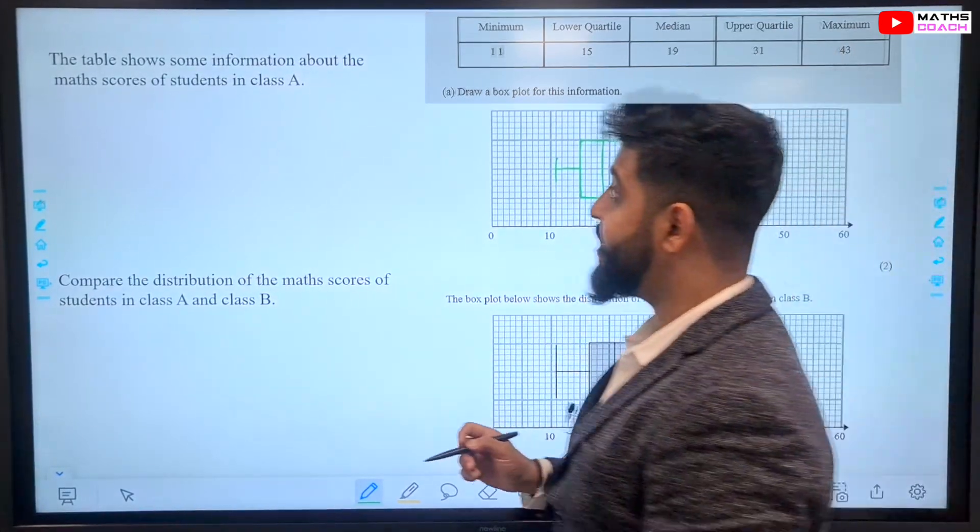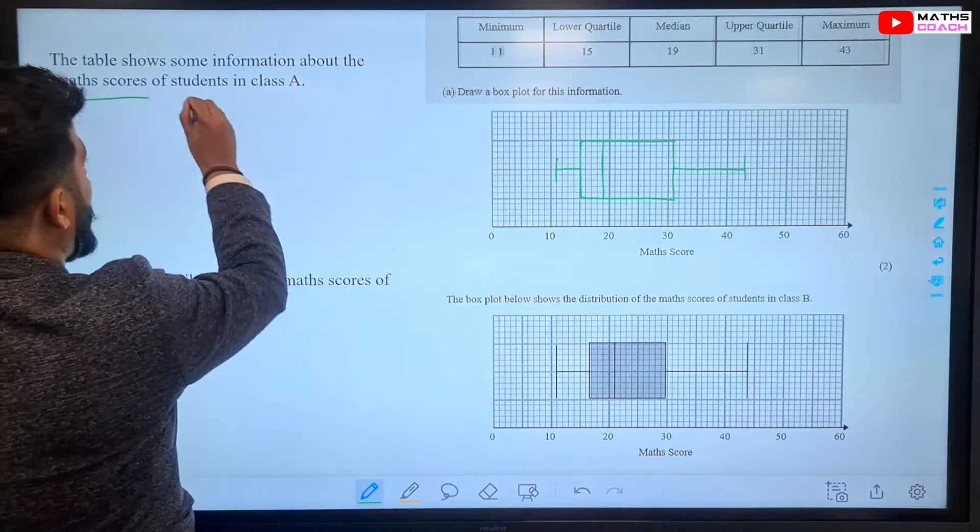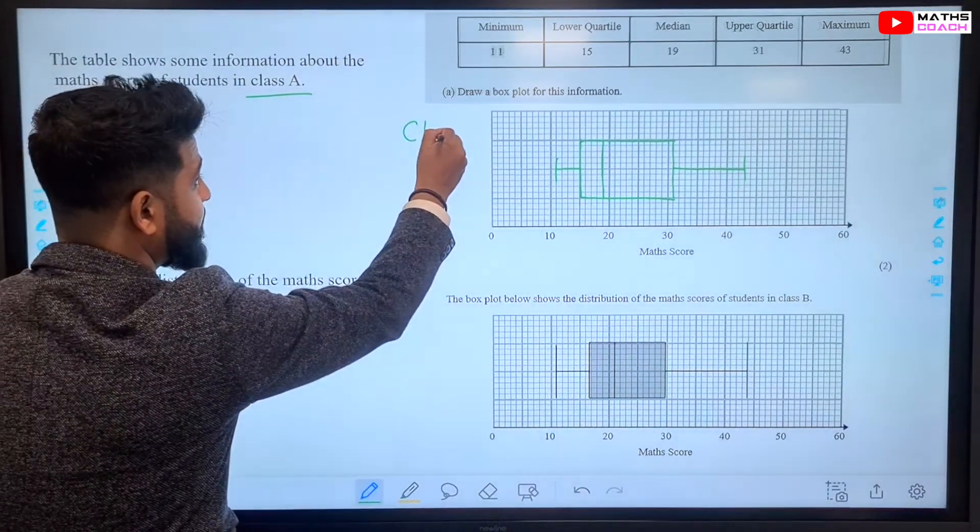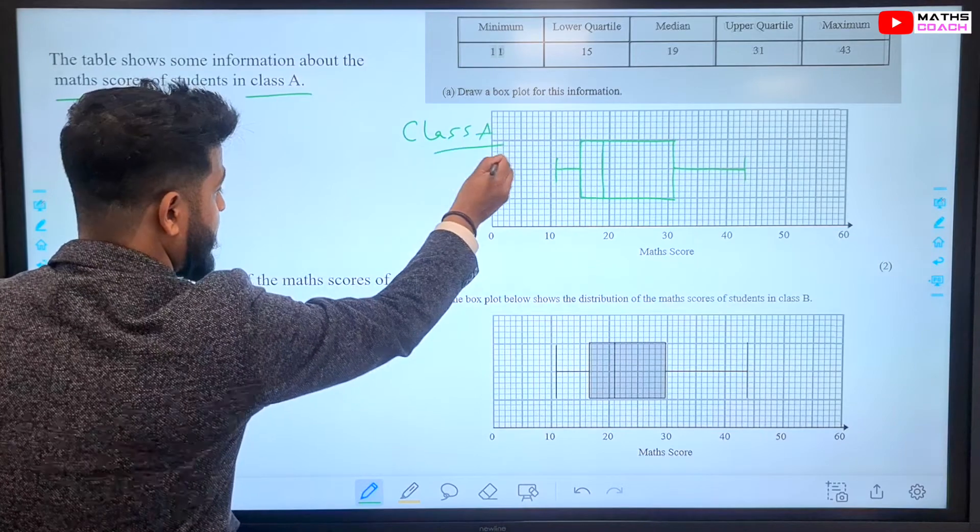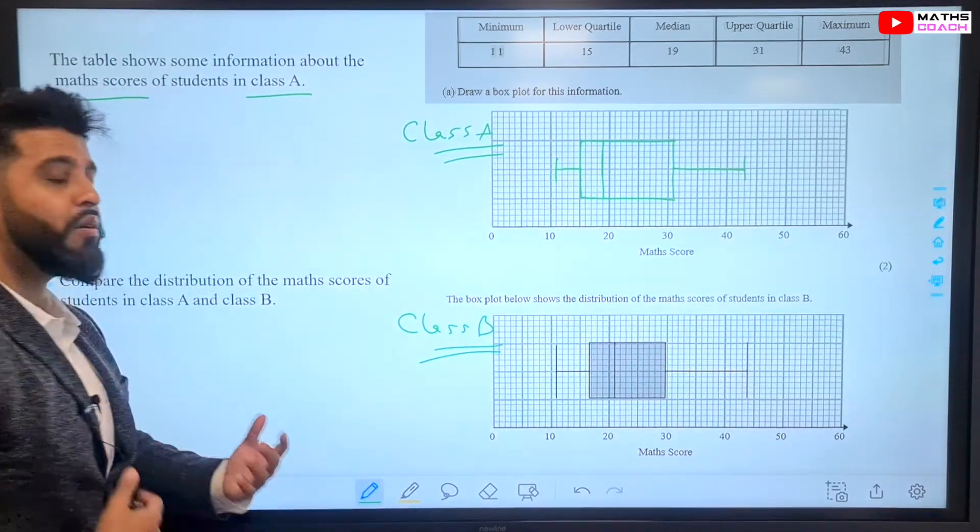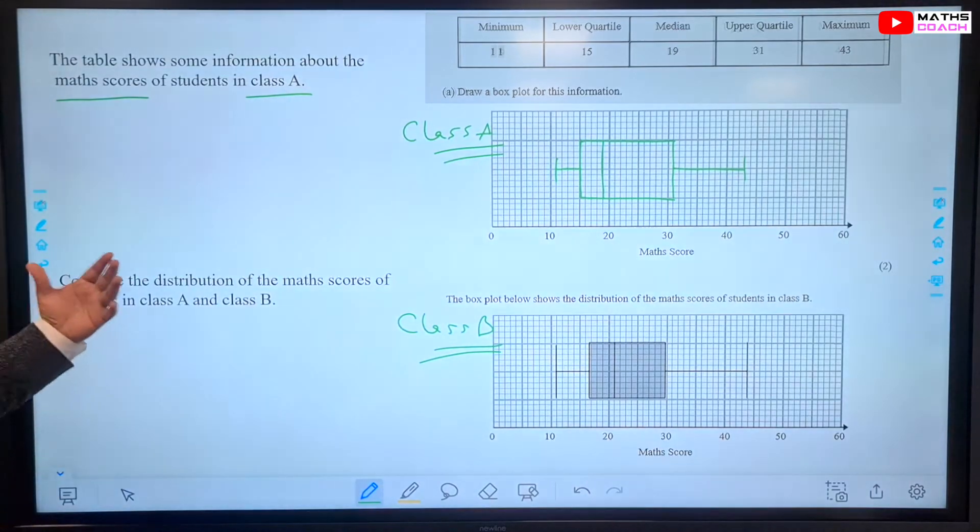What does this data show? This data shows the math scores of students in two classes. Class A, right there. So, this is Class A, and Class B. And we are going to now compare.